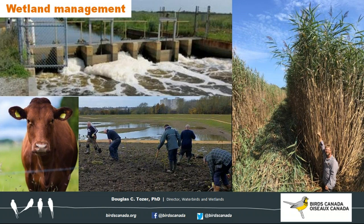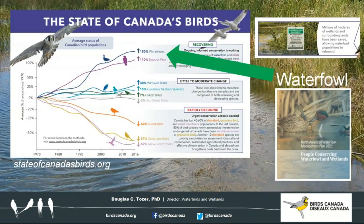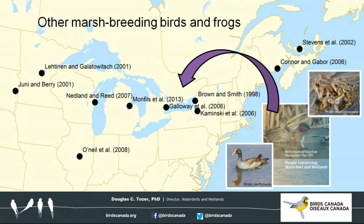First, wetland management. Various techniques enhance the quality of marshes for wildlife, including water level manipulation to mimic natural dynamics, cattle exclusion to prevent disturbance and nutrient loading, planting trees in surrounding uplands to buffer pollution and runoff, and control of invasive plants — particularly the non-native invasive form of Phragmites. We often hear about how these techniques benefit ducks and other waterfowl, as they are the main techniques used under the North American Waterfowl Management Plan, known as NAWMP.